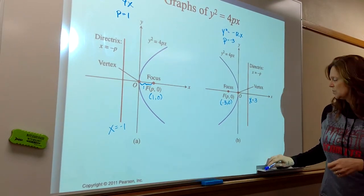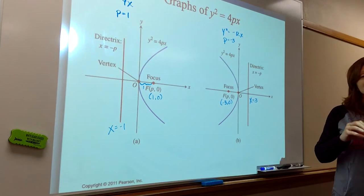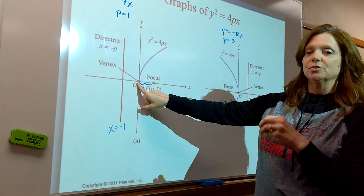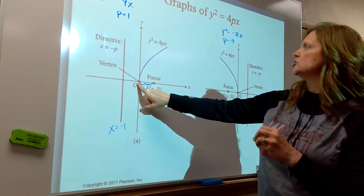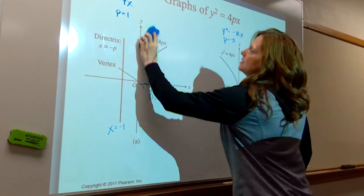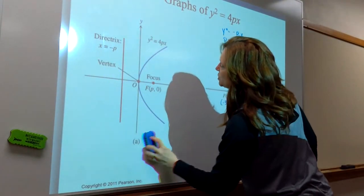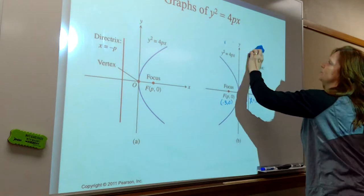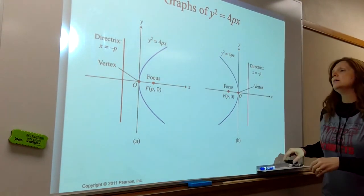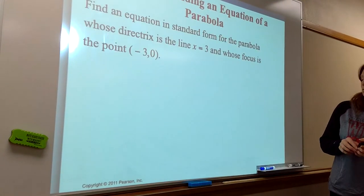Those are the general forms for parabolas with vertex at (0, 0). Your notes are going to be super helpful — you can look back and see how these equations relate to the graphs.